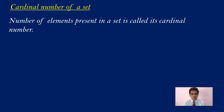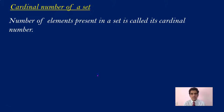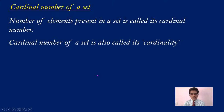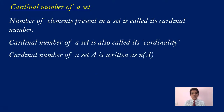Have a look at this definition. The number of elements present in a set is called its cardinal number. The cardinal number of a set A is written as n(A) — n and A in brackets. N stands for number of elements. If the name of the set is A, cardinal number is written as n(A). If the name of the set is B, you write its cardinal number as n(B), and so on. This is the notation we use to represent the cardinal number.